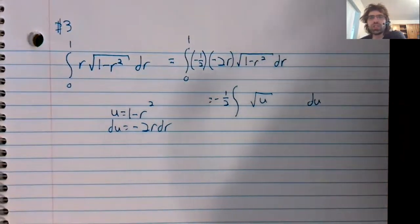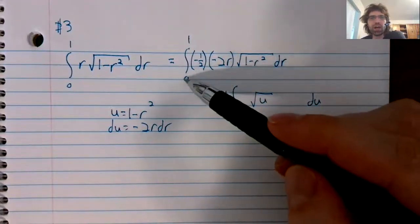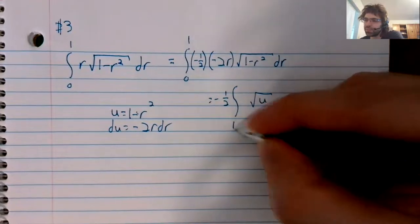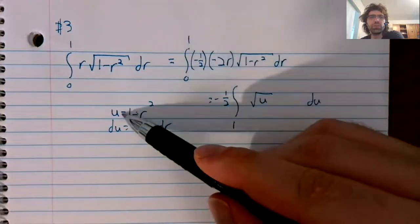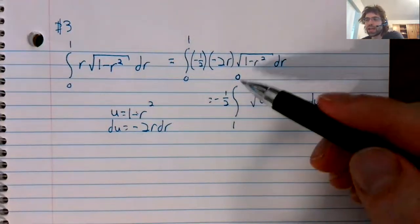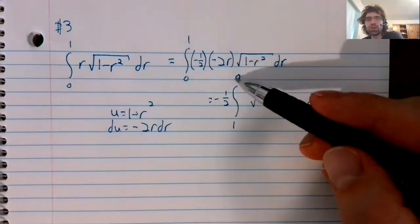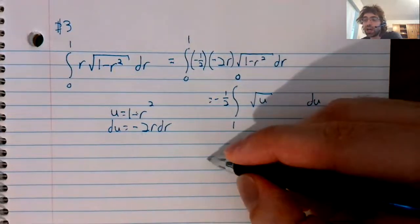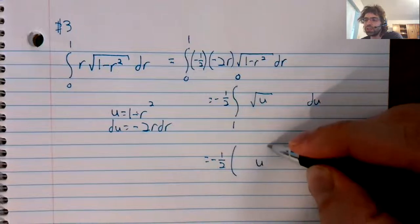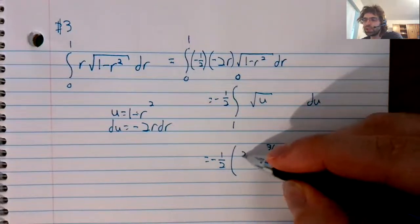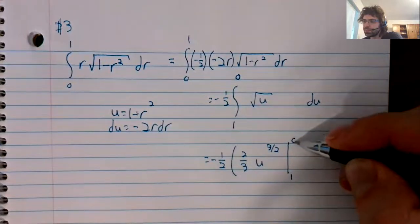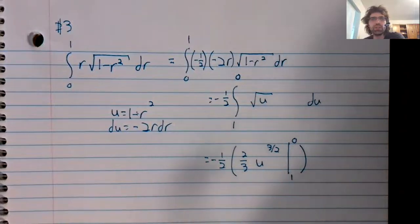And this into the square root of u. And let's change the limits of integration. If r equals zero, u equals one. If r equals one, u equals zero. We're used to having a smaller number here and a larger number here, but this is fine. It's not hurting anything. We'll take the antiderivative. U to the one half gets bumped up to three halves.